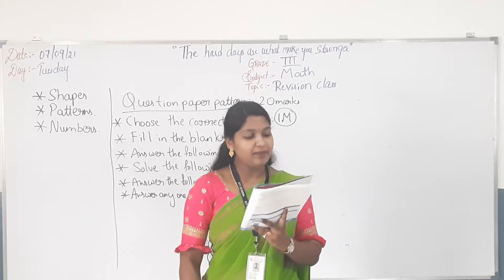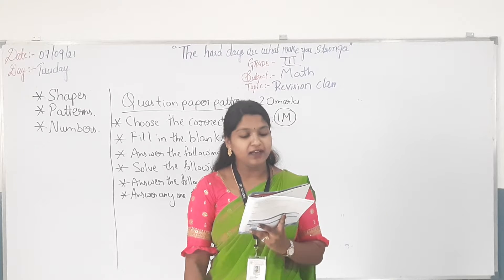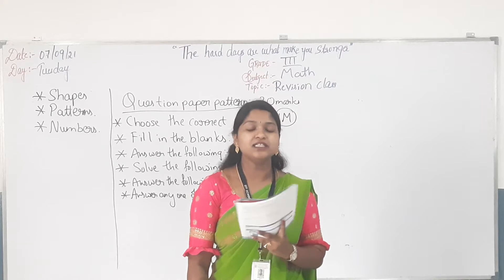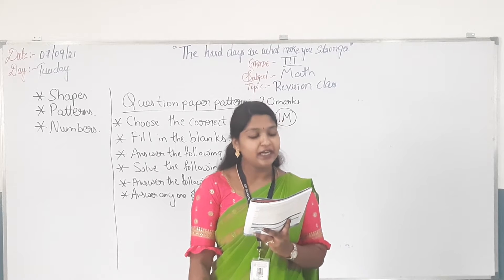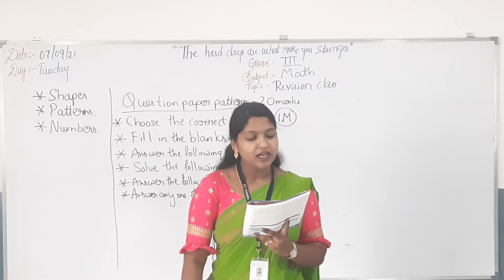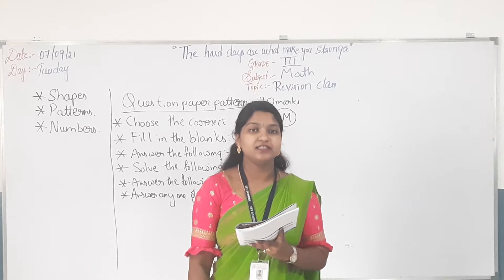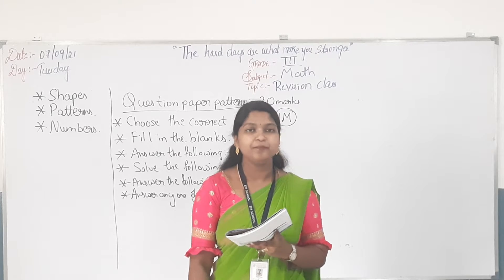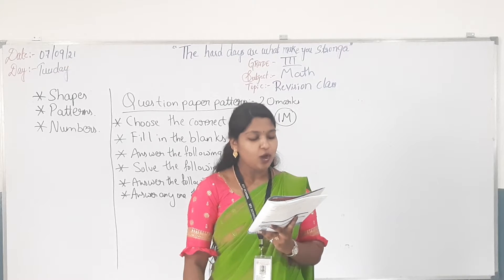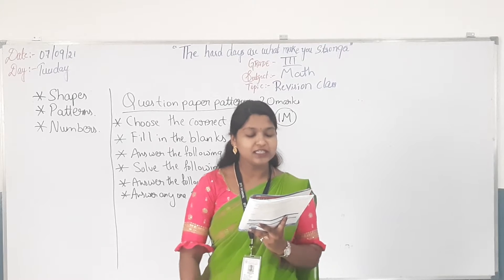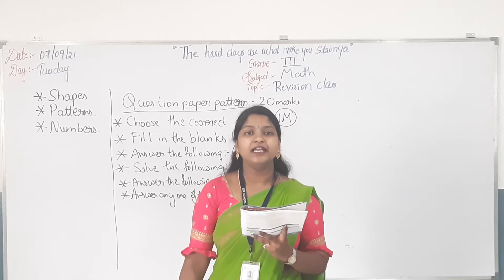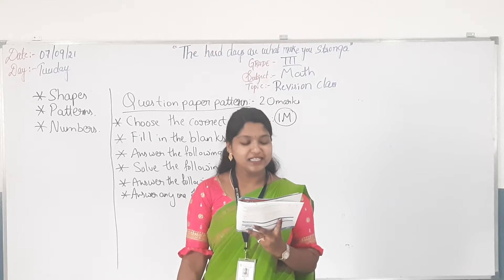Page number 2, fill in the blanks. A square and a rectangle have 4 vertices. A circle has 0 vertices — a circle does not have vertices. Then, 11th question: how many vertices does a triangle have? A triangle has 3 vertices.